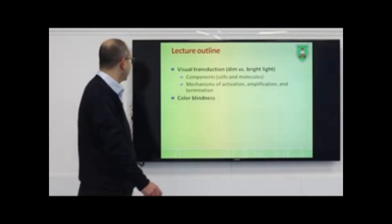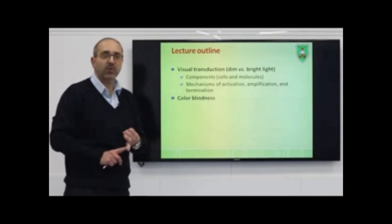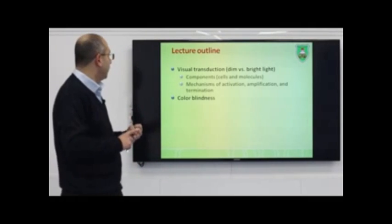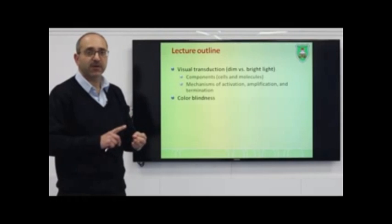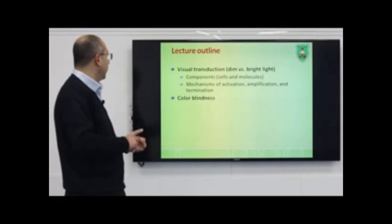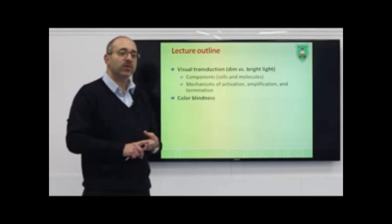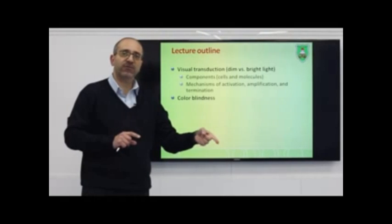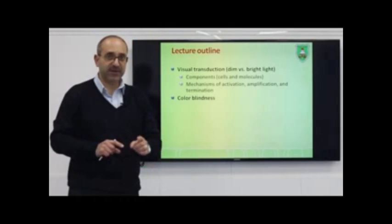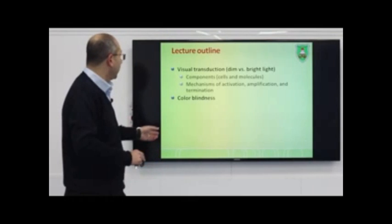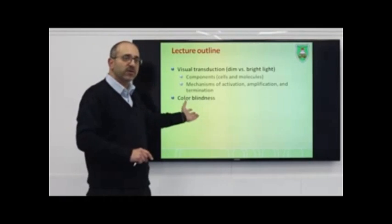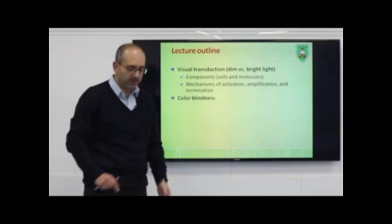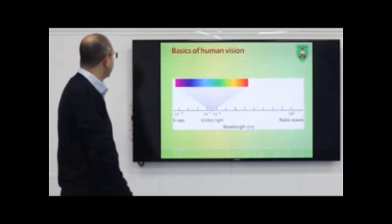We'll be talking about visual transduction — how we see in dark and light. We'll talk about the mechanisms, the cells, and then the molecules. We'll talk about how the signal is not only excited but also how it's terminated, which is really important. At the end of this lecture, we'll talk about color blindness and the genetics of color blindness.